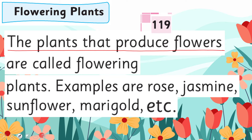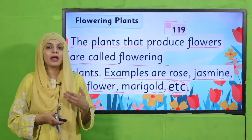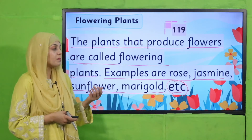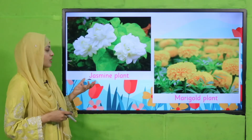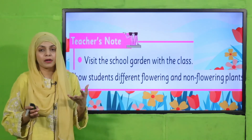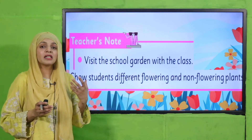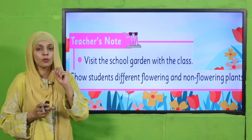Flowering plants: the plants that produce flowers are called flowering plants. Examples are rose, jasmine, sunflower, marigold, etc. Aise poudhe jinn ke upar phool lagte hain, unko hum flowering plants kehte hain. Their examples are rose, marigold, jasmine, sunflower. Fruit trees and vegetables bhi phool produce karte hain, aur unhi se fruit bante hain — keep this in mind.